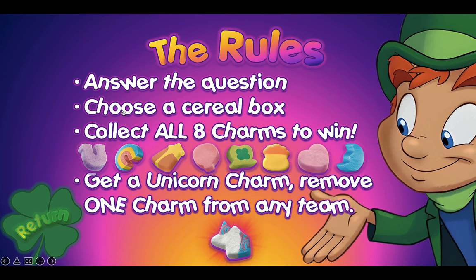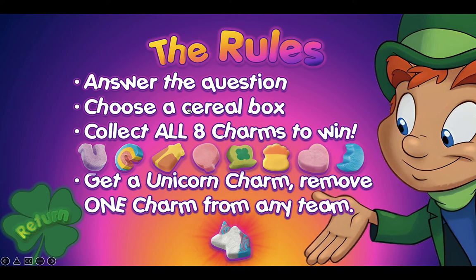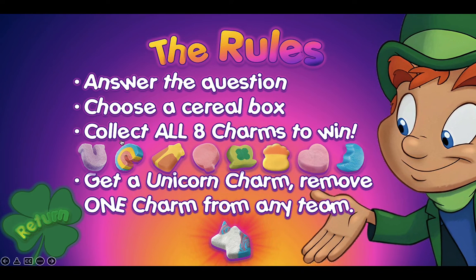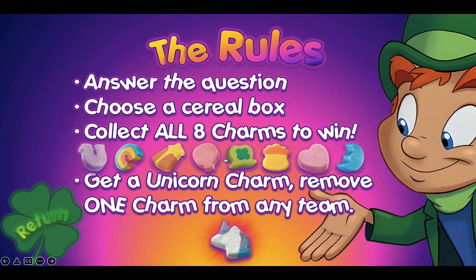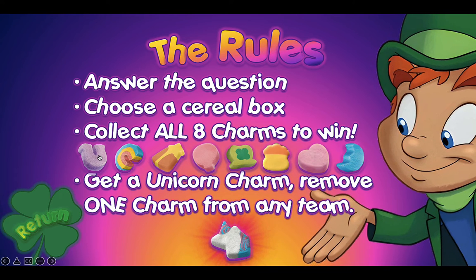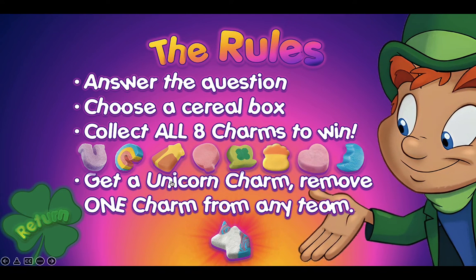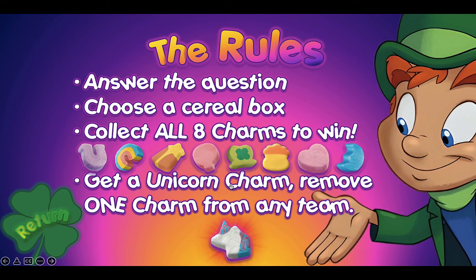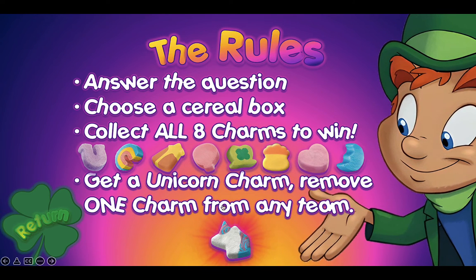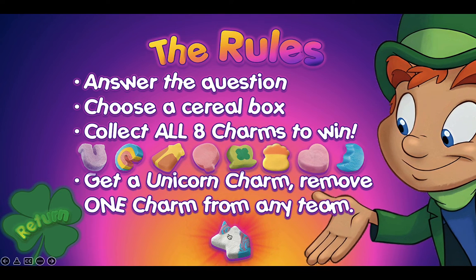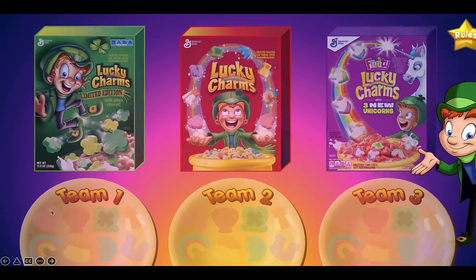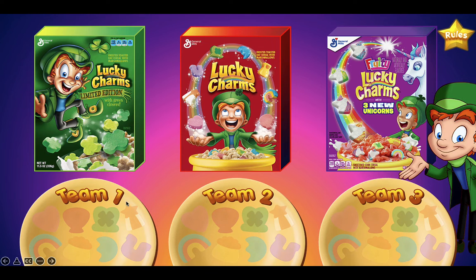If they answer correctly, they can choose a cereal box — green, red, or purple — and they want to collect all eight charms to win the game. Once they collect all eight charms, they win. But if they get a unicorn charm, they can remove one charm from any team. That's the basic rule, but you can use it however you want for your lesson. Click the return button to go back to the main board.